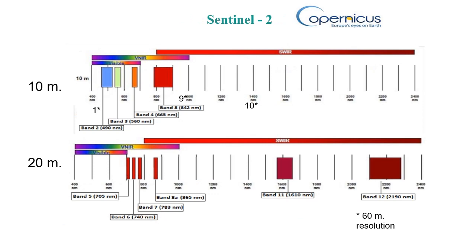In this practice we are going to use images from the Sentinel project, specifically from the Sentinel-2 sensor. This sensor takes images in three different spatial resolutions. At 10-meter spatial resolution we have bands 2, 3, 4, and 8, which cover the visible and near-infrared spectrum — these are the ones we will use the most. There are also images at 20-meter pixel size: bands 5, 6, 7, 8A, 11, and 12. Among these, bands 11 and 12 are of particular interest because they are in the shortwave infrared spectrum.